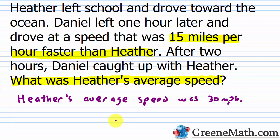You can check this easily: are the distances equal? If Heather drives at 30 miles per hour for three hours, distance = 30 × 3 = 90 miles. For Daniel, driving at 45 miles per hour for two hours, distance = 45 × 2 = 90 miles. The distances match, so Heather's average speed was 30 miles per hour and Daniel's was 45 miles per hour.